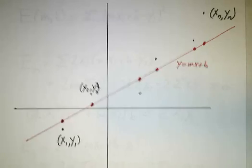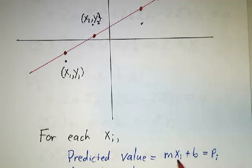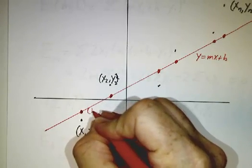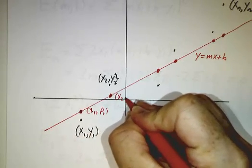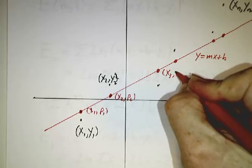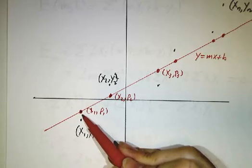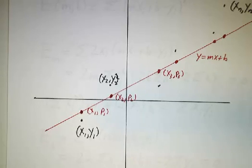So we will call the predicted values pi. And the formula for pi is you just plug in xi into the line: mxi plus b is the predicted value. So this is the point x1, p1. And this is the point x2, p2. And this is the point x3, p3. The points on the line have y values of p1, p2, p3, and their x values are the same as the original x values.